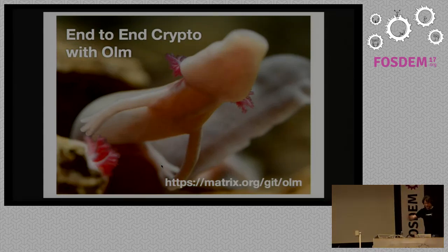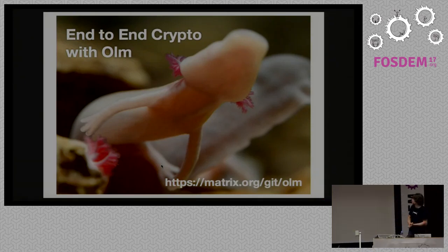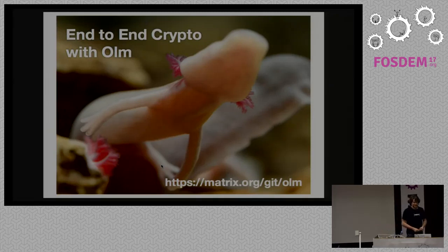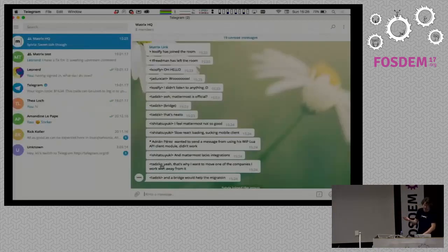Now let's talk about crypto. This is an olm — it's a salamander from the cave systems of Postojna in Slovenia, the closest thing we have to a European axolotl, which is the North American salamander that Open Whisper Systems named their ratchets after in Signal — originally called the axolotl, before they renamed it the Double Ratchet. We renamed it Double Ratchet with the olm as our symbol. OLM is our own implementation and it's the foundation of all the encryption in Matrix.